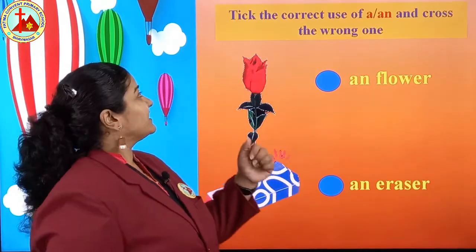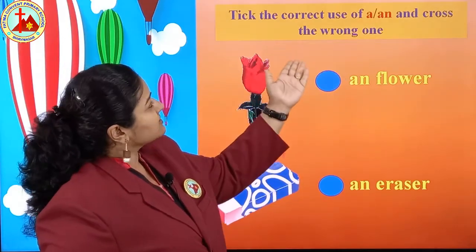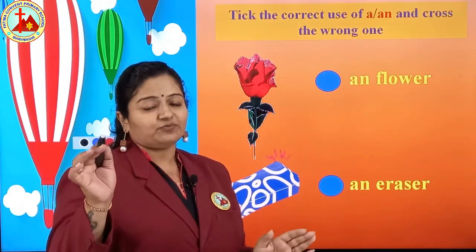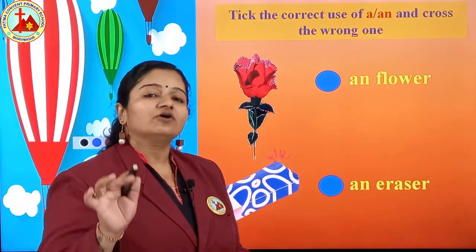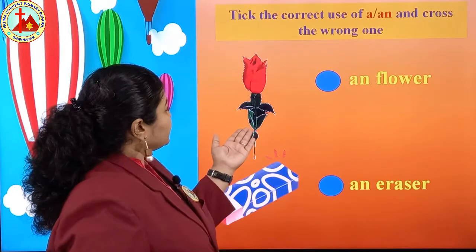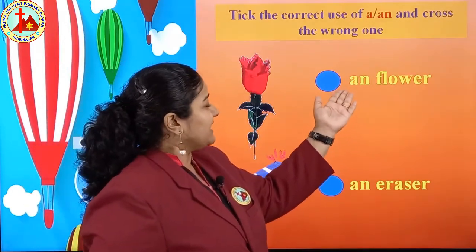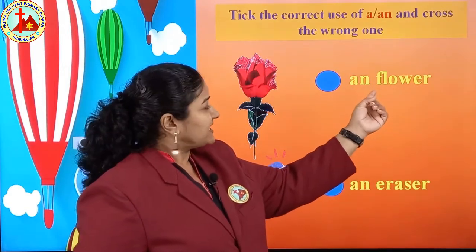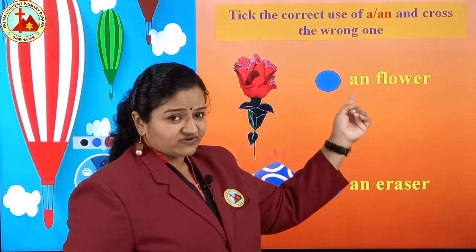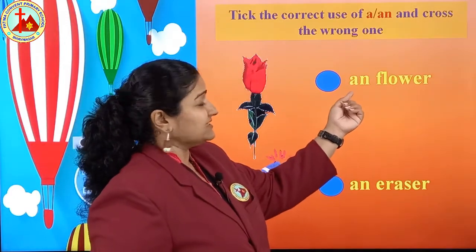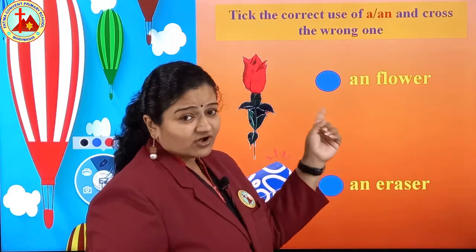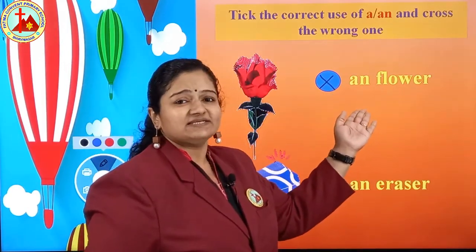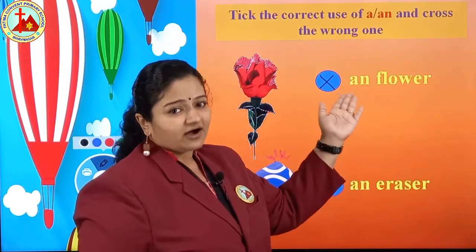Now, second exercise. Take the correct use of A and AN and cross the wrong one. It is already written A and AN. If it is correct, put a tick mark; if it is wrong, put a cross. First picture is flower. It is written AN flower. First letter of flower is F — F is not a vowel. But AN is written, so this sentence is wrong. You have to put a cross. A flower is correct.